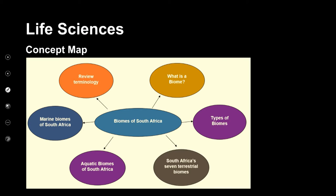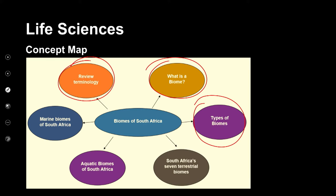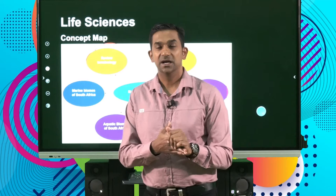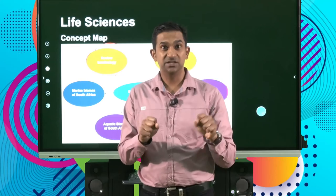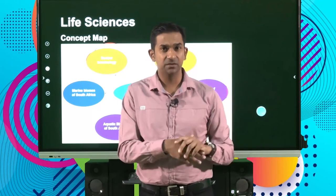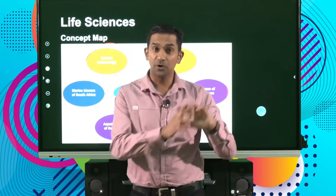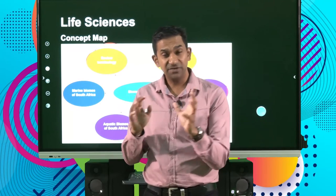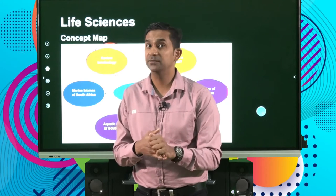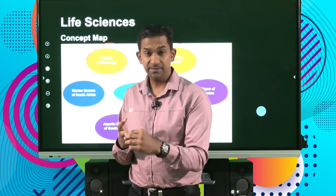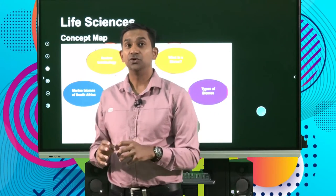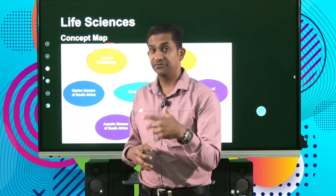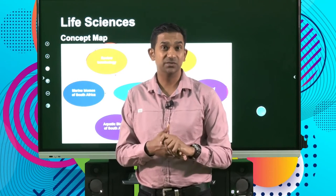As we get into the lesson, we've looked at some important terminology and unpacked what biomes are. Broadly speaking, biomes are classified according to the presence of land — terrestrial — or water. In South Africa, we have seven terrestrial biomes. The aquatic biomes are based on either freshwater sources like rivers, lakes, and dams, or marine biomes, which vary along the depth of the ocean and the type of water entering the seas.